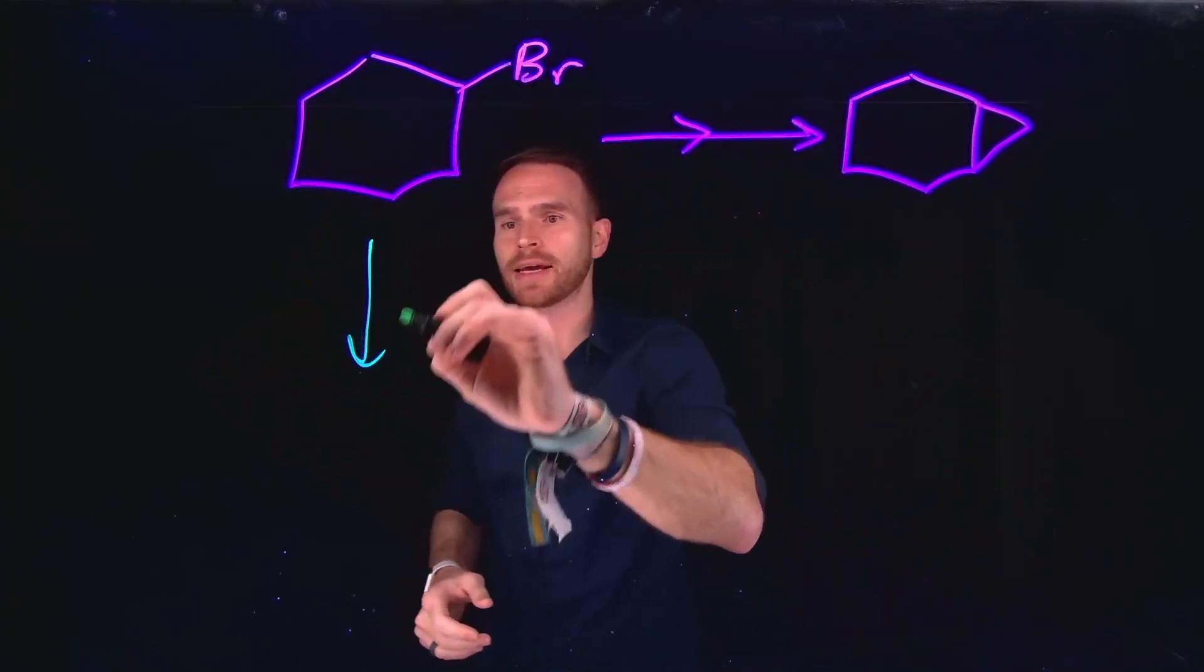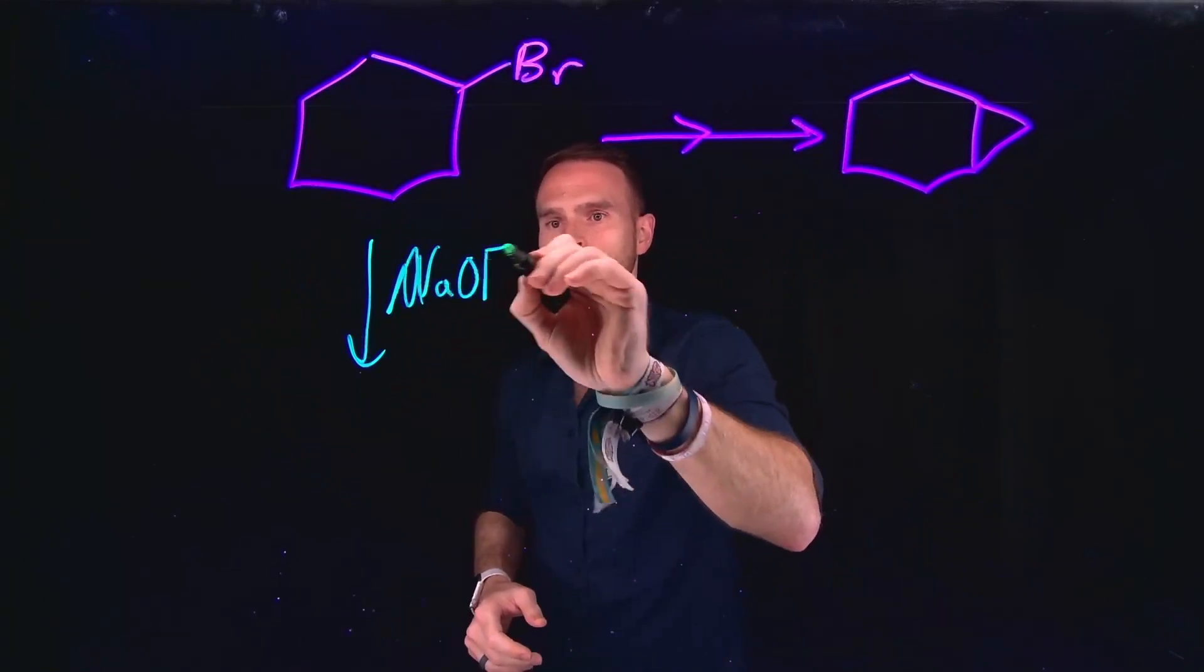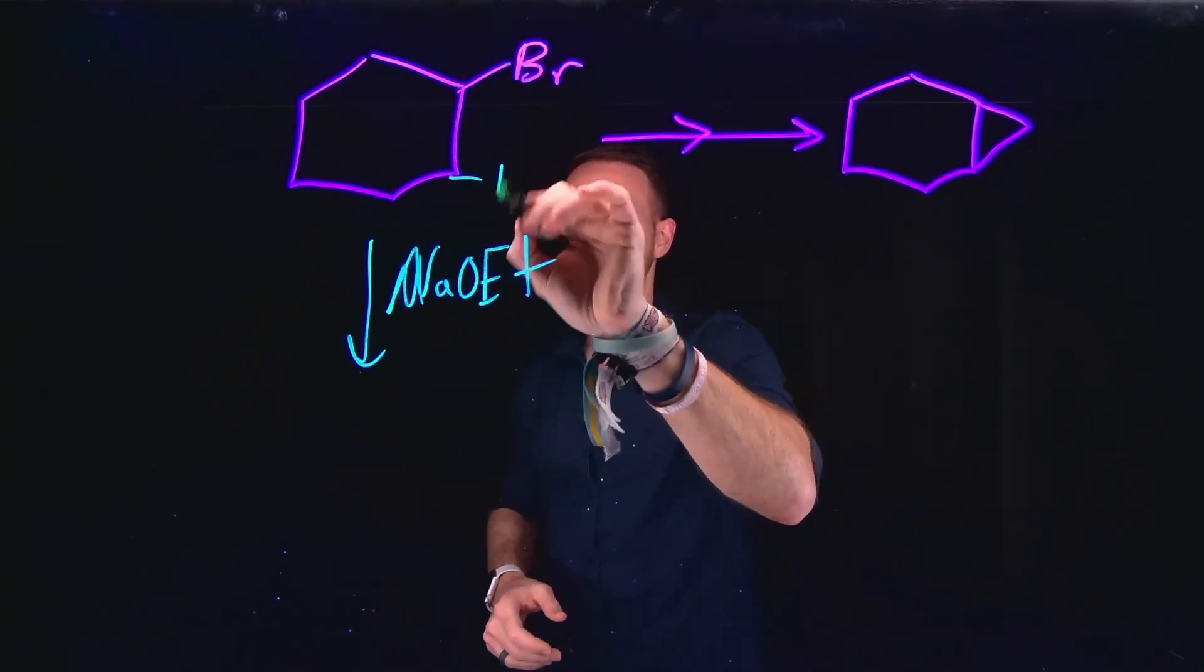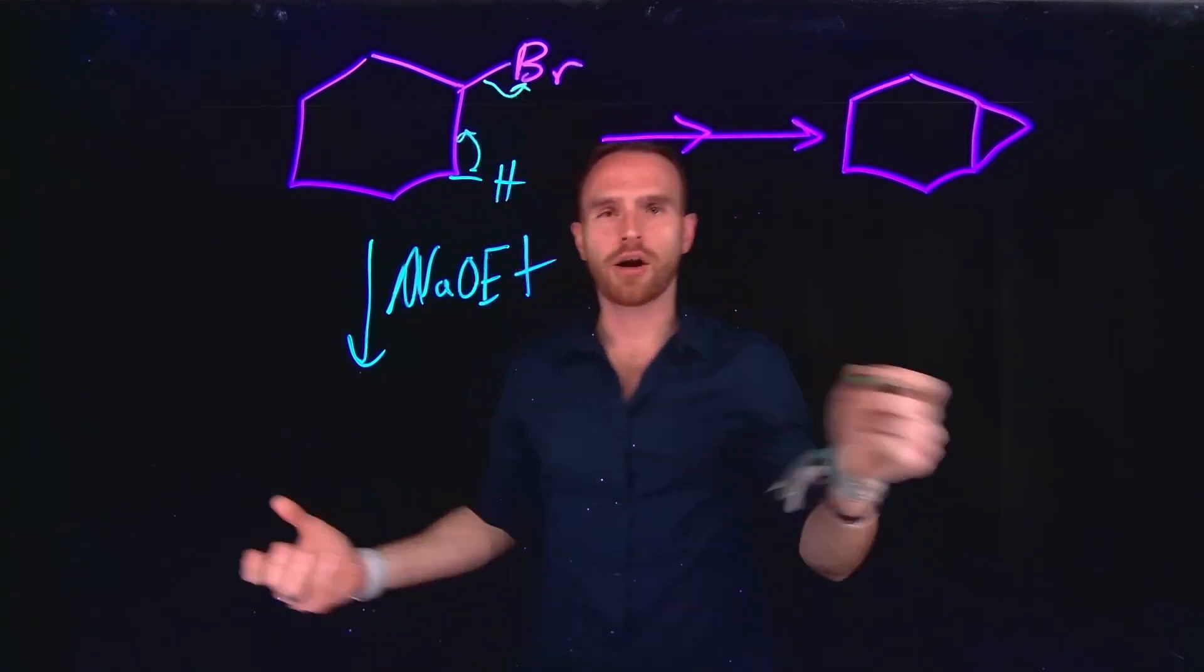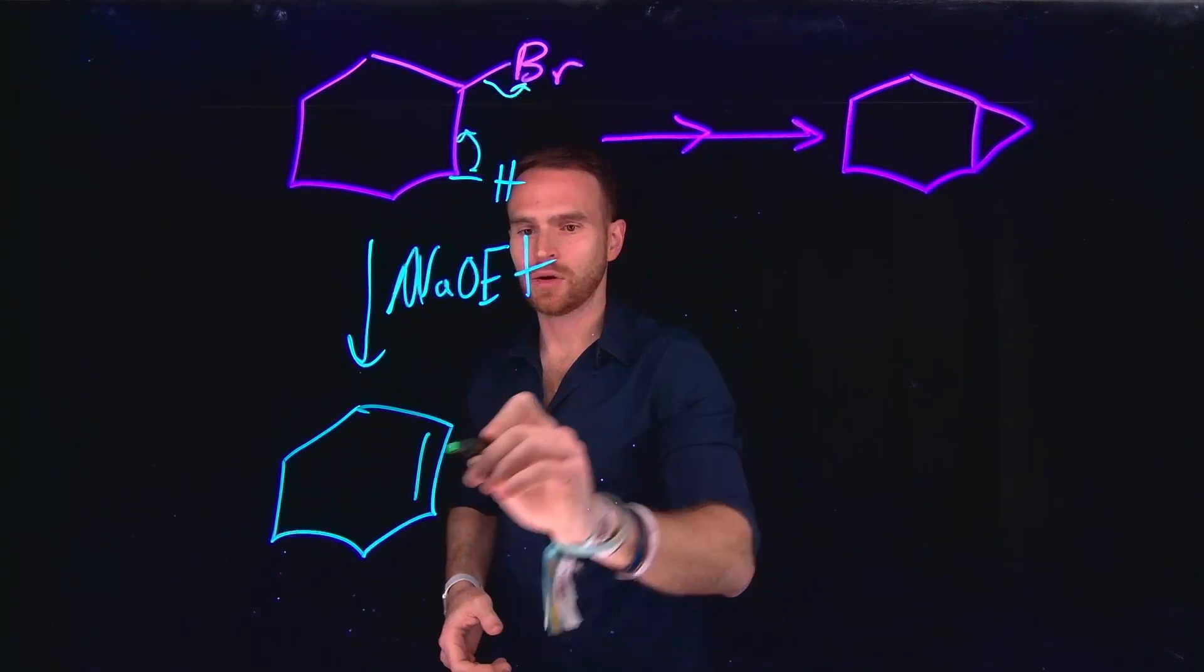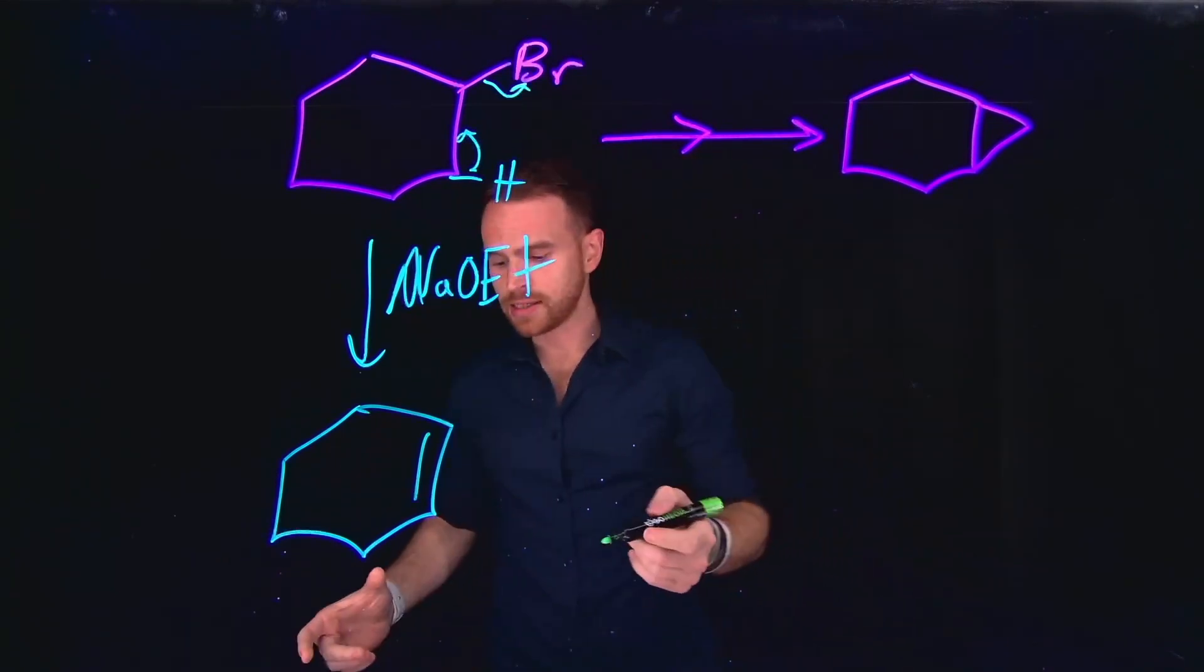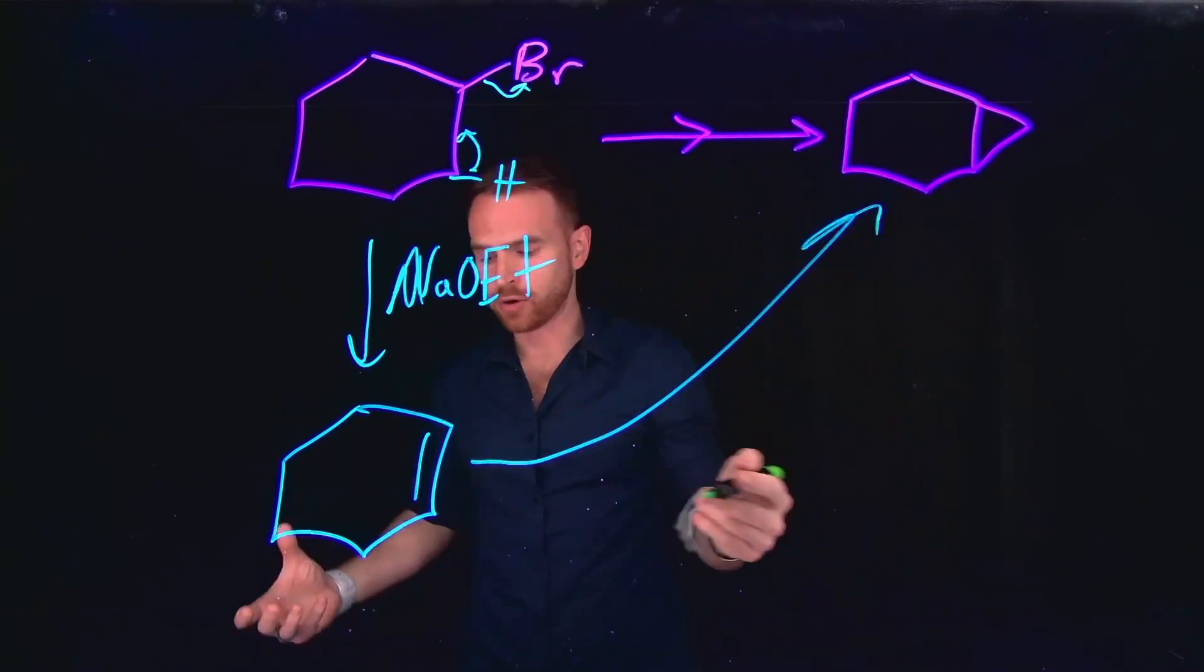And we can do that by adding a base, like sodium ethoxide, for example. And this will allow us to deprotonate one of these hydrogens, bringing down the electrons and kicking off the bromine, generating our new cyclohexane ring. And then from there,